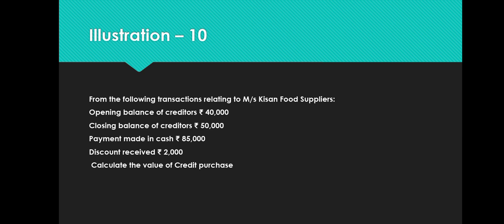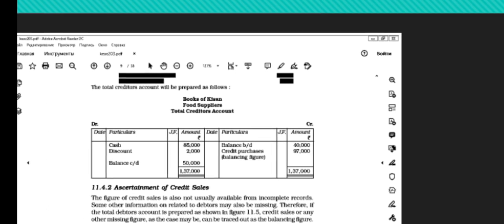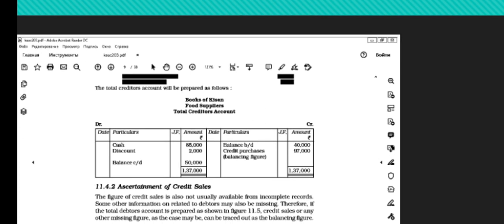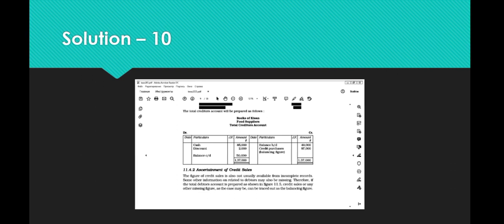Illustration 10: Opening creditors Rs. 80,000; closing creditors Rs. 50,000; cash paid to creditors Rs. 85,000; discount received Rs. 2,000. Creditors account: credit side opening balance 80,000 + credit purchases (balancing figure) = debit side — cash 85,000 + discount 2,000 + closing creditors 50,000. Credit purchases = Rs. 57,000. Another example gives credit purchases as Rs. 13,000 after accounting for purchase returns.